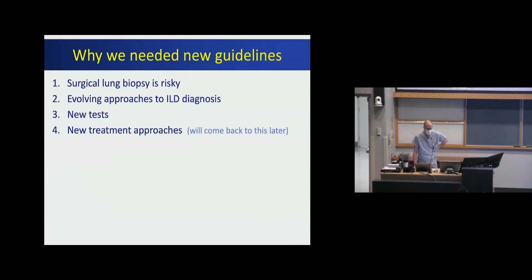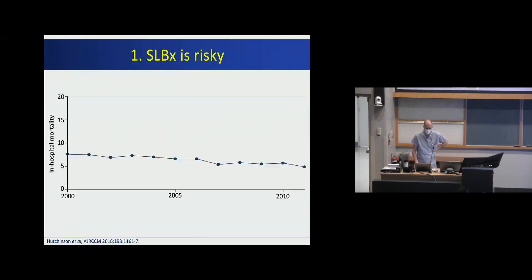So why did we need new guidelines? The last few years have brought us a couple of new guidelines, and there are four main reasons: number one, surgical lung biopsy is risky; two, we have evolving approaches to ILD diagnosis; three, we have some new tests, some available here and some coming along; and four, new treatment approaches.